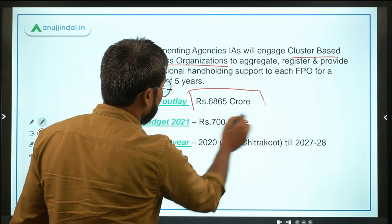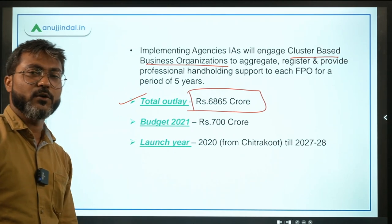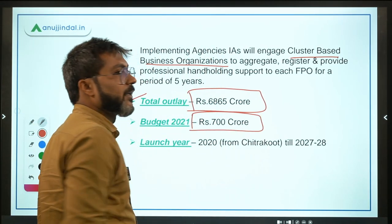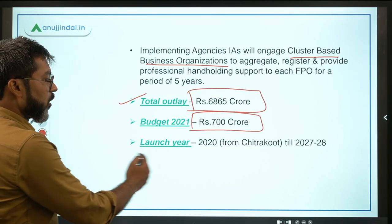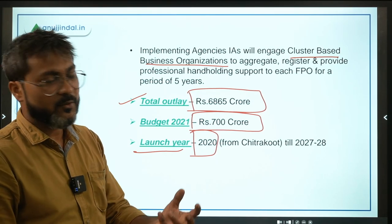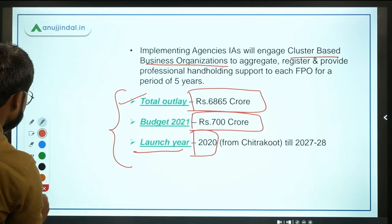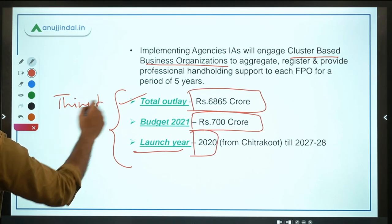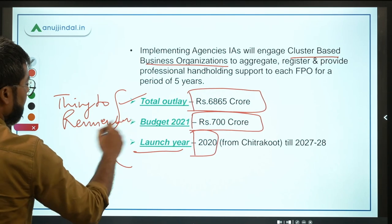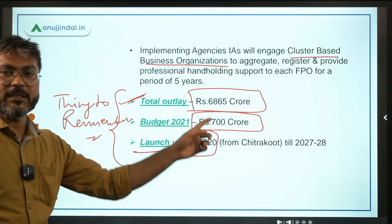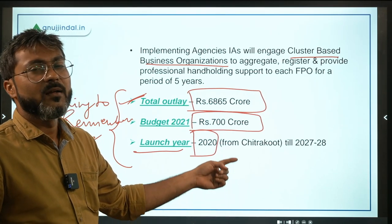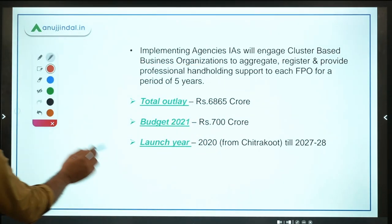Key figures to remember: Total outlay is ₹6,865 crore. In this year's budget, the government allocated ₹700 crore. The scheme was launched in 2020 from Chitrakoot, which is in Uttar Pradesh. These three things — total outlay, budget allocation, and launch details — are very important to remember for the exam.